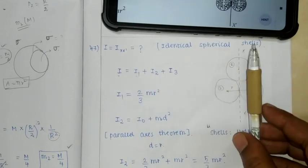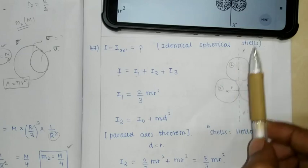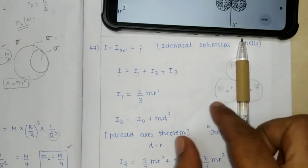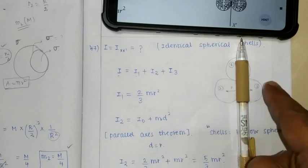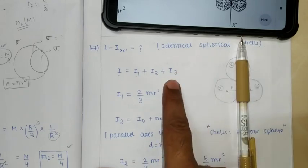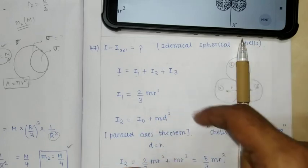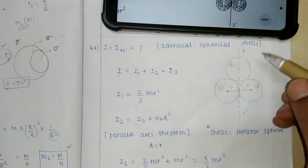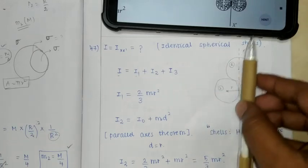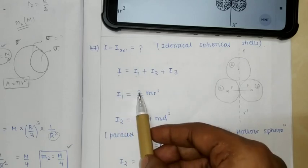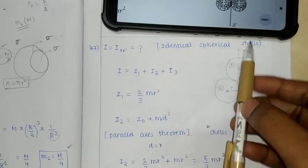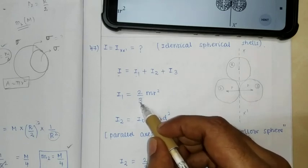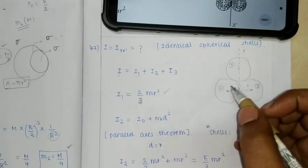I1: xx' is the axis. For the spherical shell, moment of inertia when xx' passes through the center of mass - the correct formula is I1 equals 2/3 mr². For spherical shells, solid sphere is 2/5, hollow sphere is 2/3. So I1 is 2/3 mr².